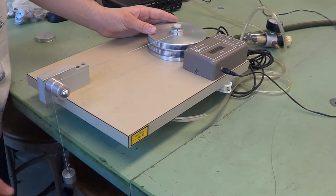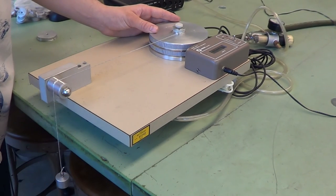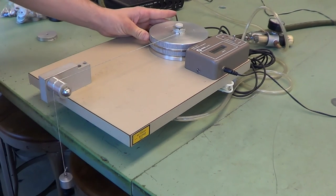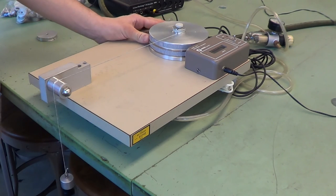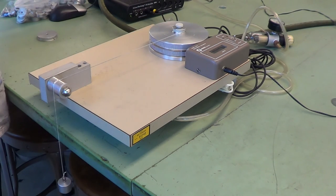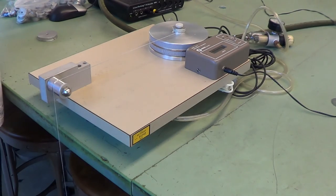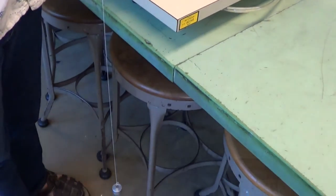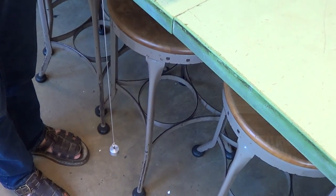Once we have this set up, we arrest the swinging of the weight. We begin taking data with Data Studio and try to start from a complete stop and simply release. Now, the next step is to begin using the windmills.